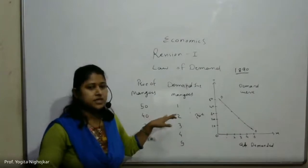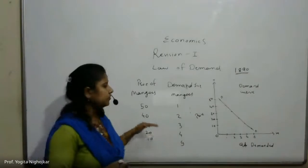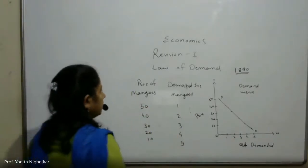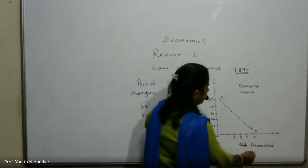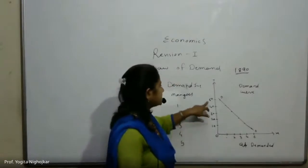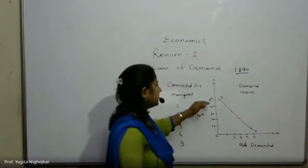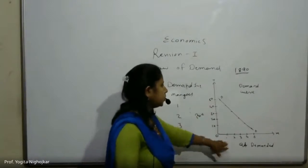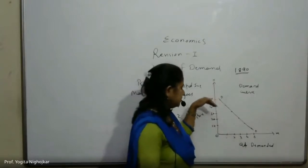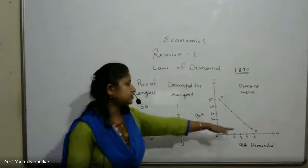The law of demand explains change in the behavior of consumer demand due to various changes in price. The X-axis indicates quantity demanded and Y-axis indicates the price. When the price is 50, quantity demanded is 1 — meaning when price is high, quantity demanded is low. The demand curve is always downward from left to right.